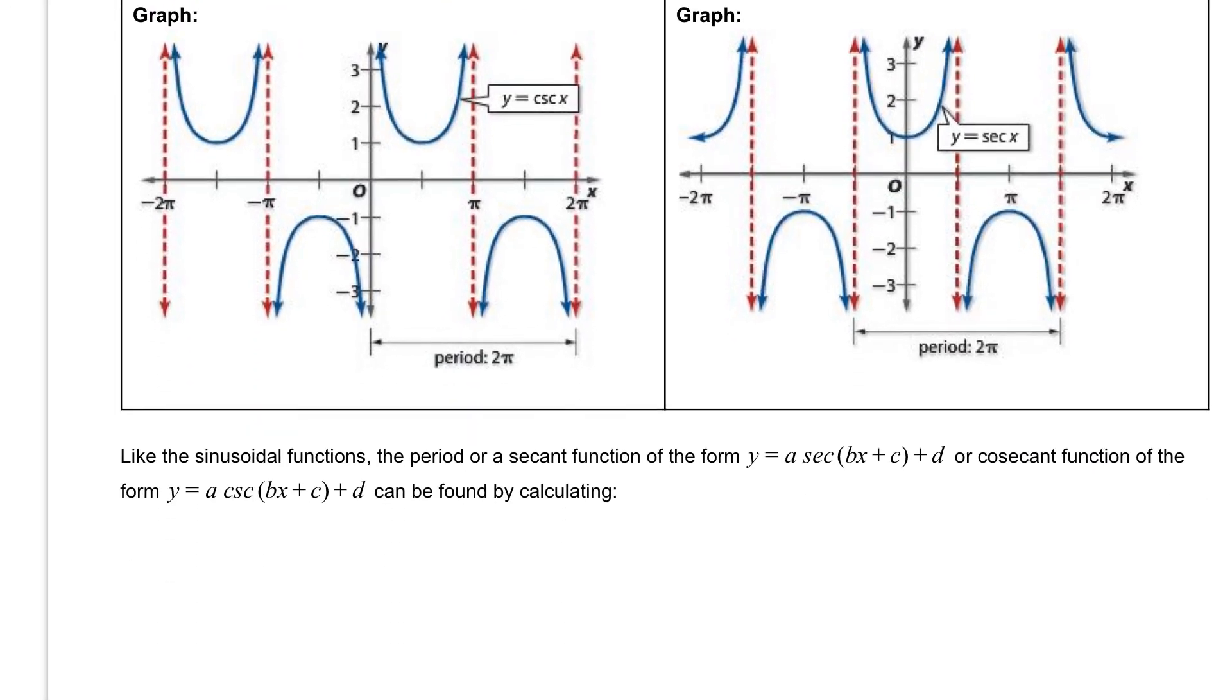The period for our cosecant and our secant graph is 2 pi just like our sine and our cosine, so it's going to repeat every 2 pi. And that's found by calculating it the same way as we calculated our sine and our cosine function, which is by taking 2 pi and dividing it by b to get that period.